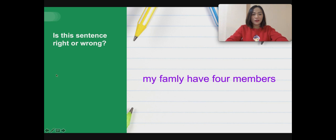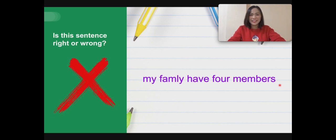Okay, first, I want you to tell me, is this sentence right or wrong? This is the sentence: My family have four members. Okay, what do you think? Is this sentence correct or incorrect? Yes, this sentence is incorrect. Now, what's wrong with this sentence?